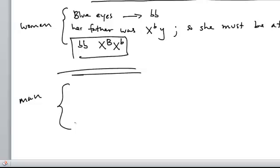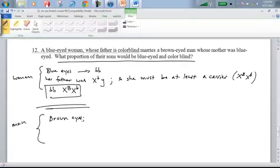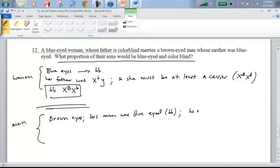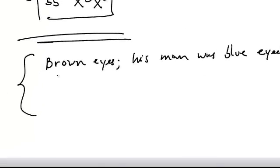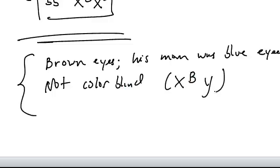Now let's talk about the man. He has brown eyes, but his mother was blue-eyed, meaning his mom could only pass along the lowercase b, or recessive allele. So even though he has brown eyes, he must be heterozygous. It's not stated that he's colorblind, so we're going to assume he has normal vision and write his sex chromosome allele combination accordingly.